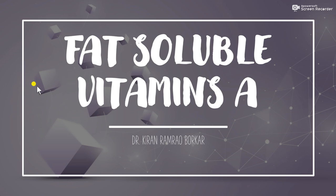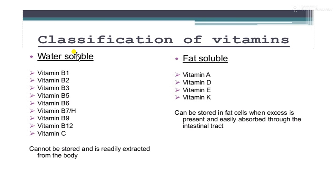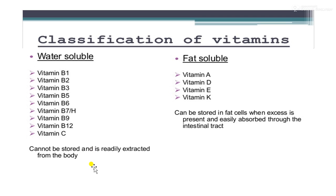Vitamins are either fat soluble or water soluble. Fat soluble vitamins are A, D, E, and K, which are absorbed through the intestinal tract. Water soluble vitamins — the B vitamins and C — are absorbed with water in the gastrointestinal tract. These vitamins move easily through water-based body fluids and cannot be stored in the body. Excess water soluble vitamins are excreted in the urine, so hypervitaminosis of water soluble vitamins rarely occurs except with excess vitamin supplementation.